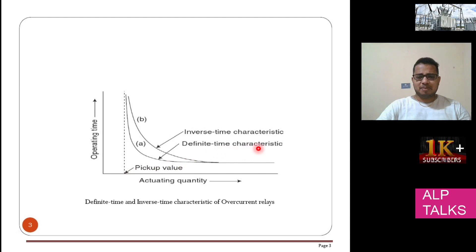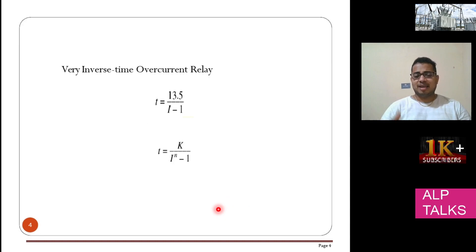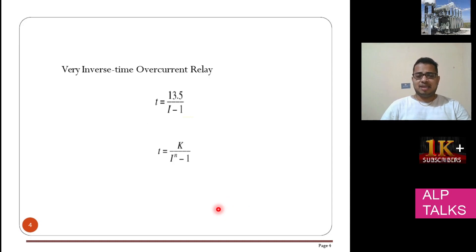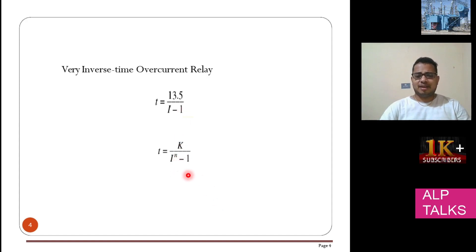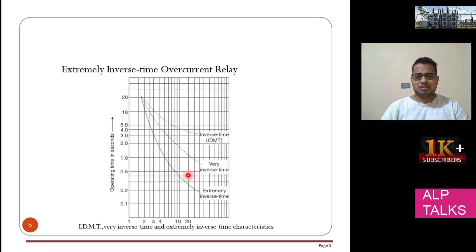We will discuss more in the coming slides. There are some equations used in the industry for relay settings — how much time setting we have to give. Here I is the current, and the exponent n value varies based on each application. There are different n values for different relay types.